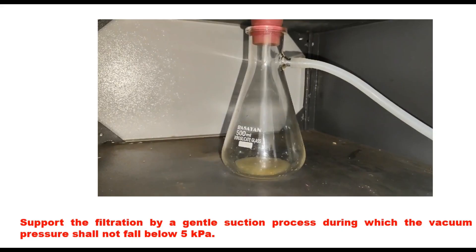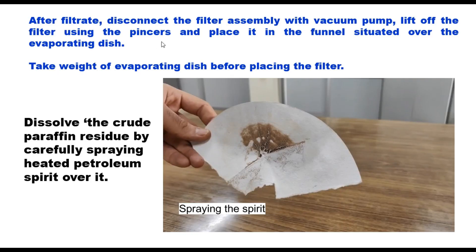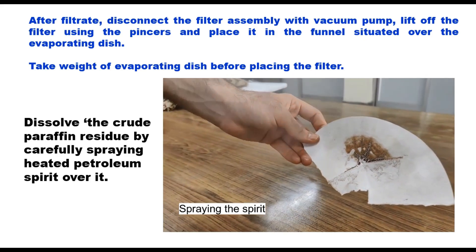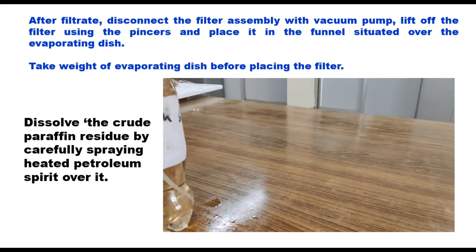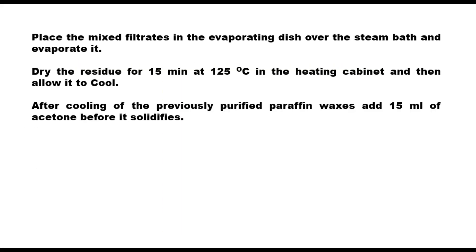After filtering, disconnect the filter assembly from the vacuum pump. Lift off the filter using pincers and place it in the funnel situated over the evaporating dish — taking the weight of the evaporating dish before placing the filter. Dissolve the crude paraffin residue by carefully spraying heated petroleum spirit over it. Place the mixed filtrate in the evaporating dish over the steam bath and evaporate it. Then dry the residue for 15 minutes at 125 degree centigrade in the heating cabinet and allow it to cool.